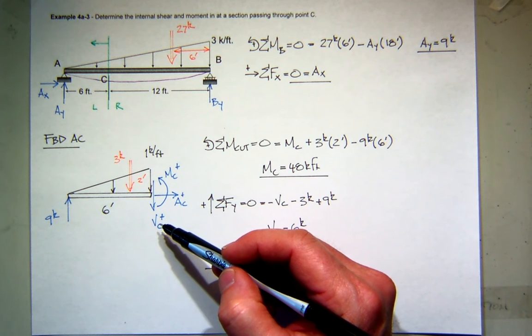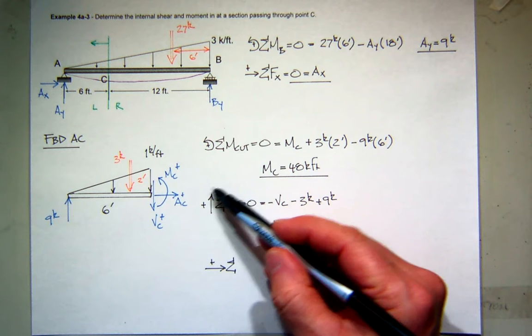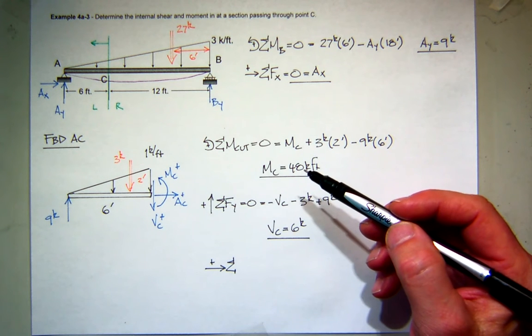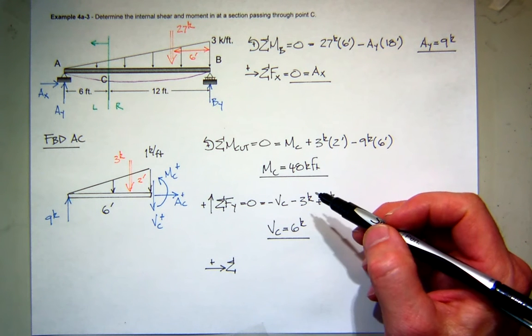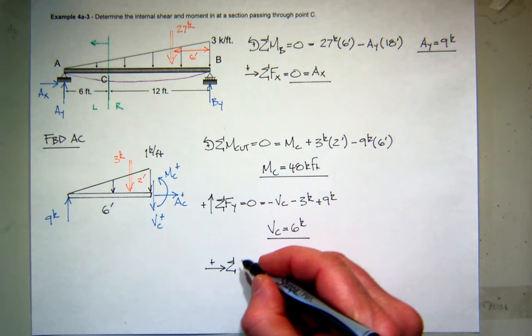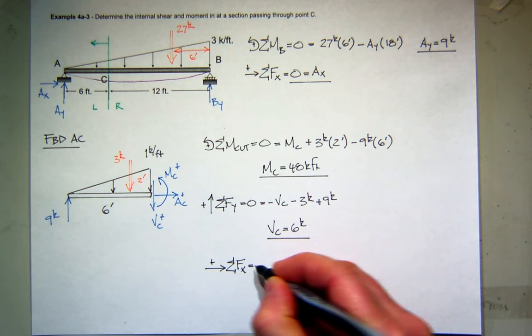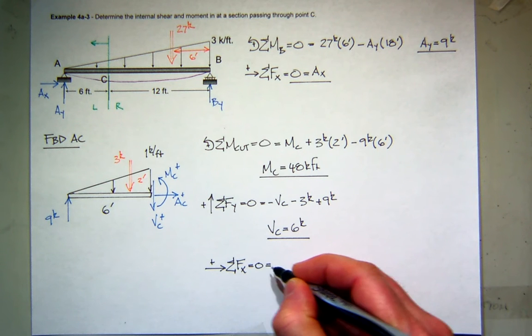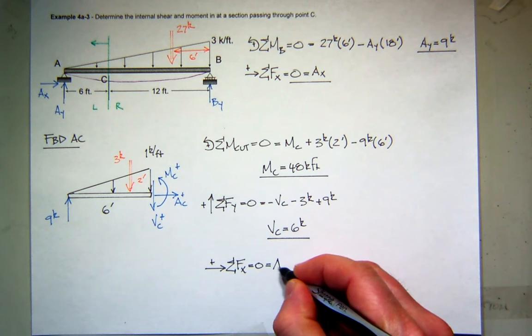When you get over here and you want to sum them, you can say up is positive, down is positive. It doesn't really matter. So if you sum forces in the x direction, all you have is, in our case, AC.